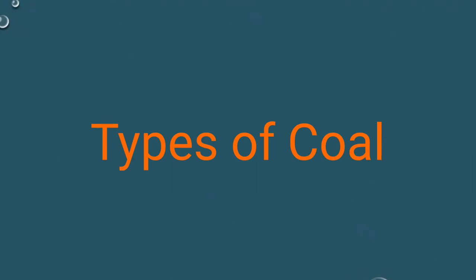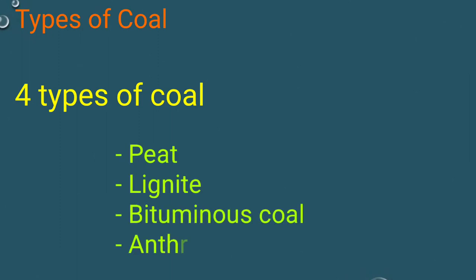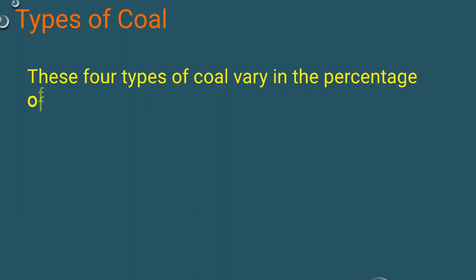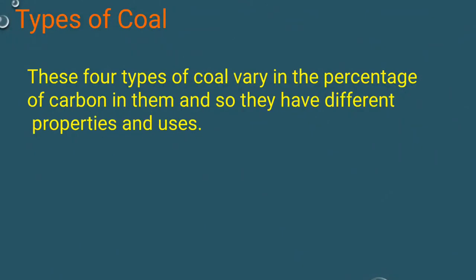There are four types of coal: peat, lignite, bituminous coal, and anthracite coal. These four types of coal vary in the percentage of carbon in them, and so they have different properties and uses.